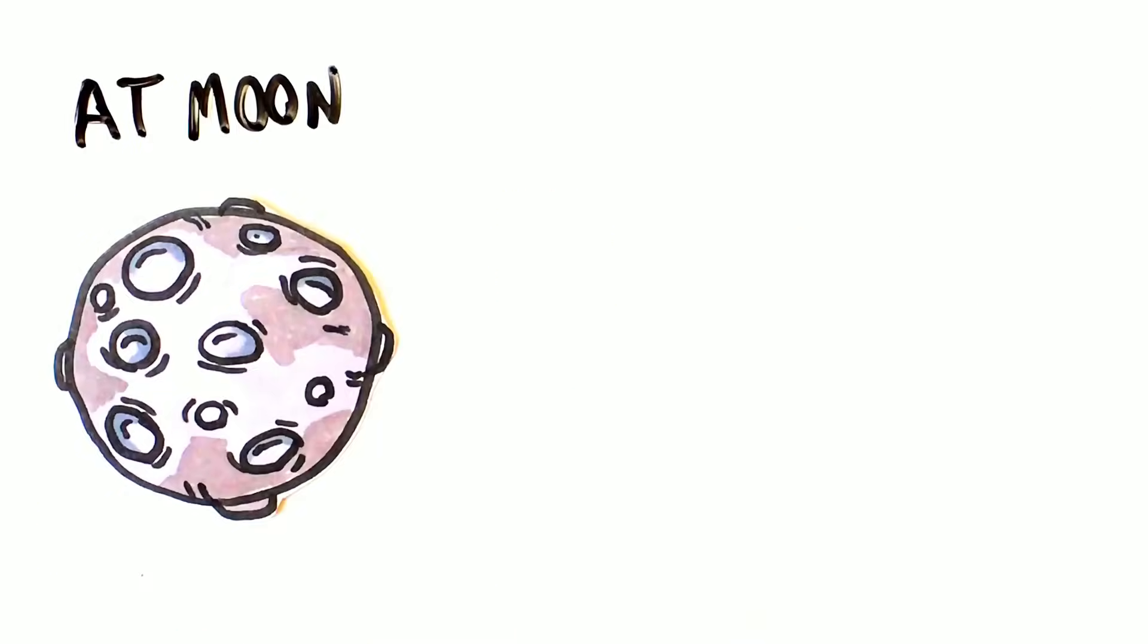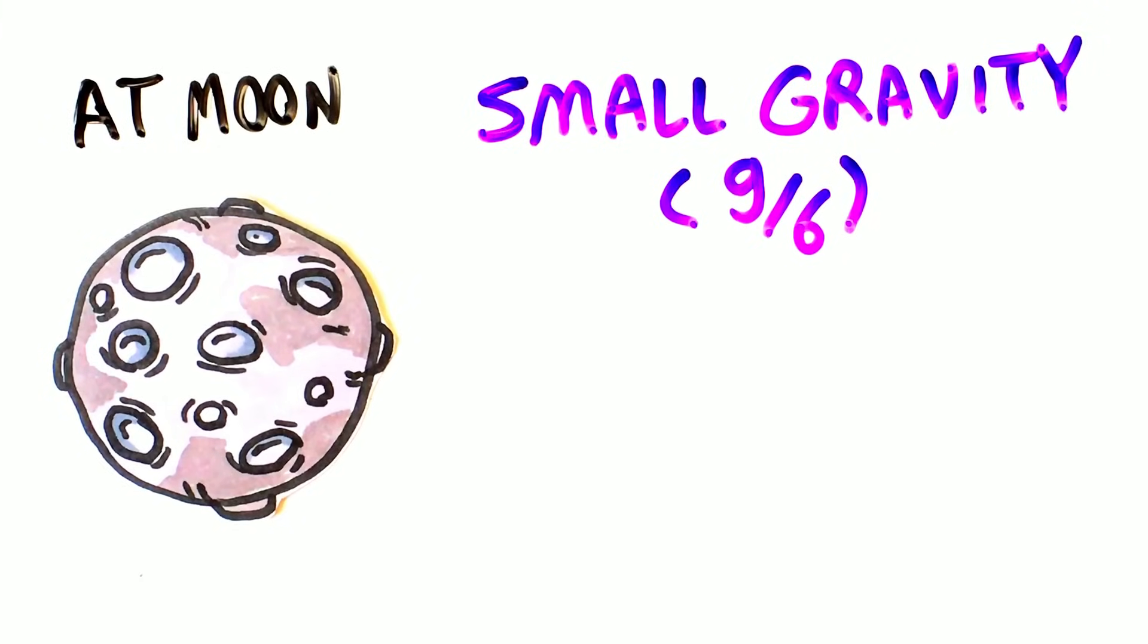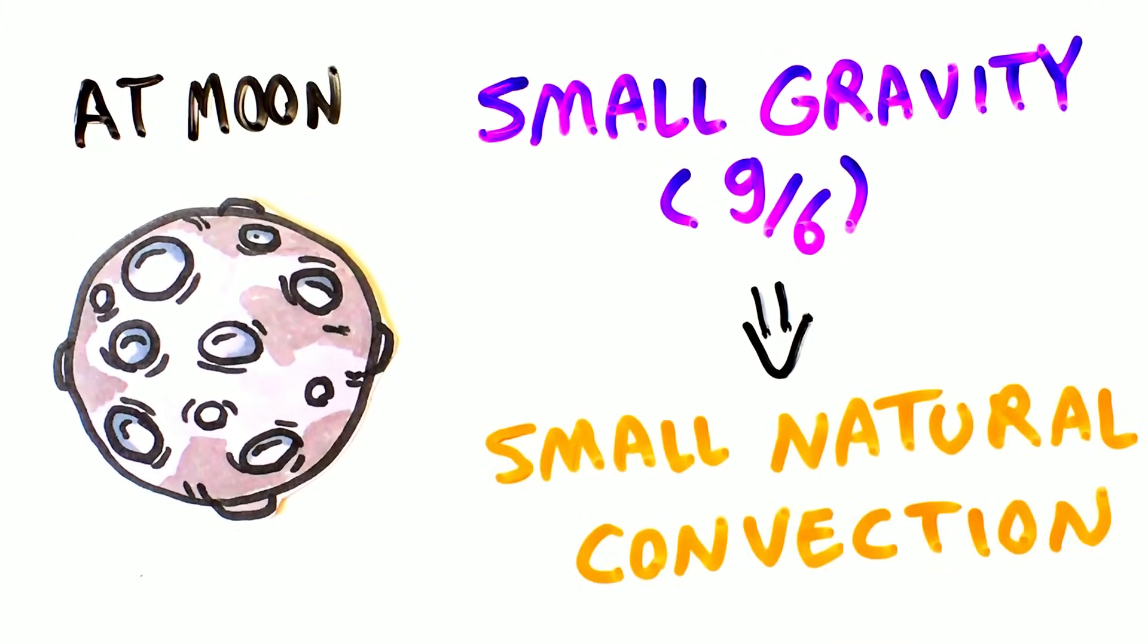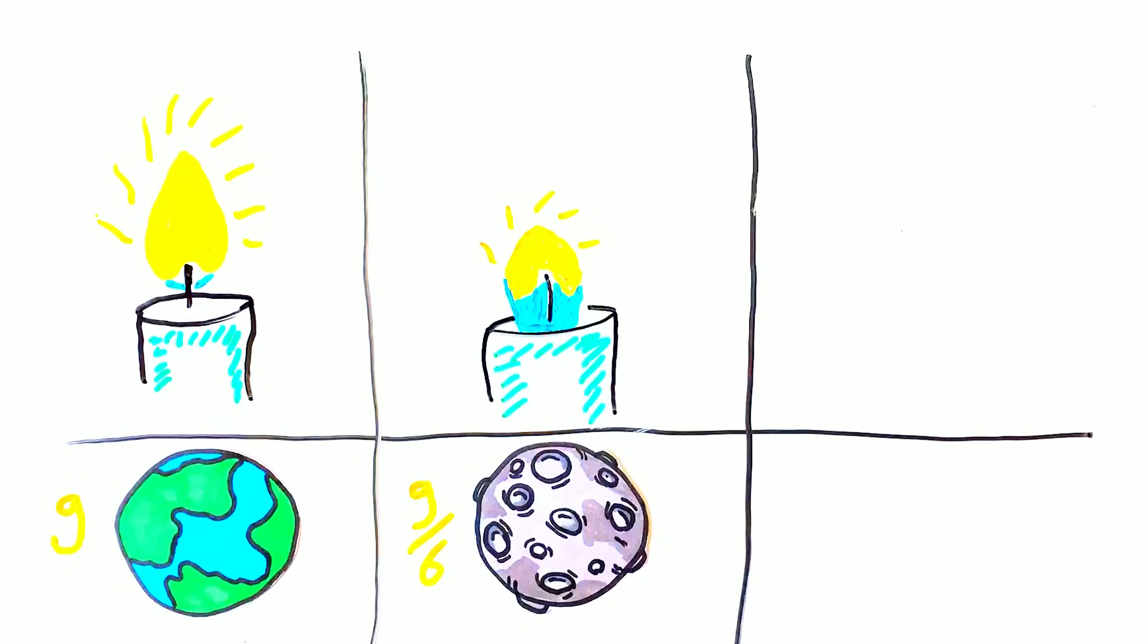Because the moon's gravity is about six times less than Earth, the natural convection is expected to be weaker but still exists. So you may see a more bluish color around the wick and some yellow at the top.